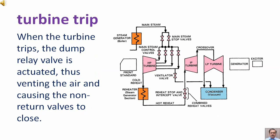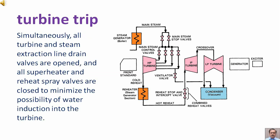When the turbine trips, the dump relay valve is actuated, venting the air and causing the non-return valves to close simultaneously. All turbine and steam extraction line drain valves are opened, and all superheater and reheat spray valves are closed to minimize the possibility of water induction into the turbine.